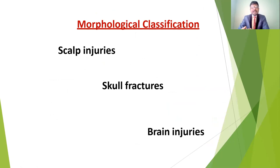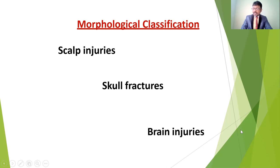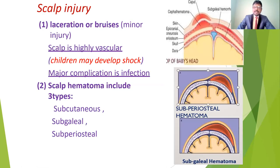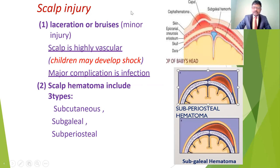If you see the morphological classification of head injuries — depending on which structure is involved — the classification is: scalp injuries, skull fracture, and brain injuries. In scalp injuries, there is going to be a laceration or bruising in case of minor injuries, and also scalp hematoma. The hematoma may be subcutaneous, subgaleal, and subperiosteal — these are three types of hematoma.